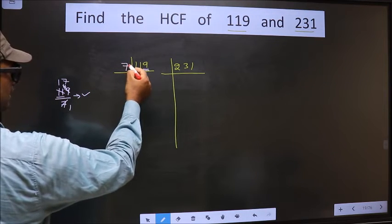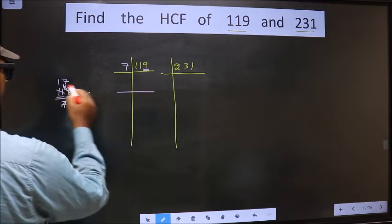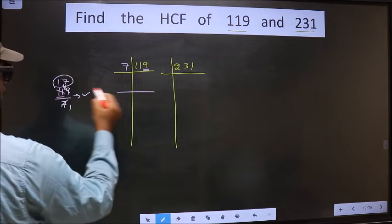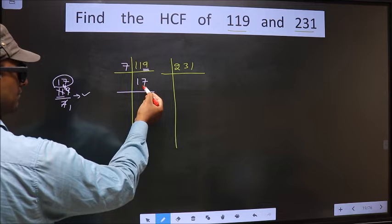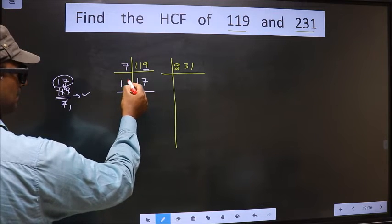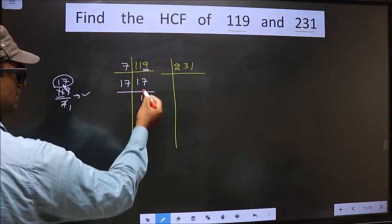So 7 here, and here we should write this number, that is 17. Now we have 17. 17 is a prime number, so we take 17 once, 17.